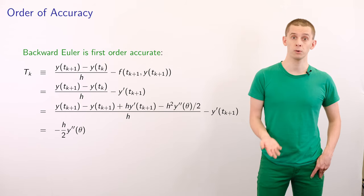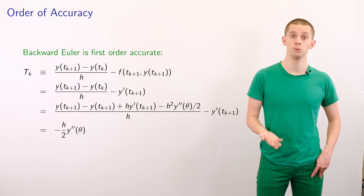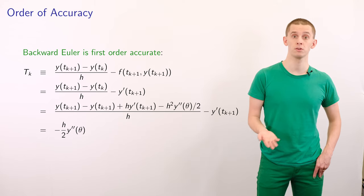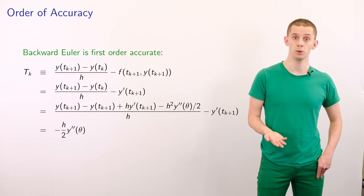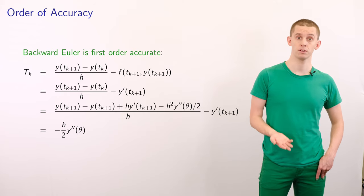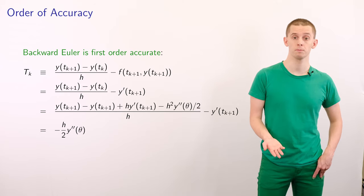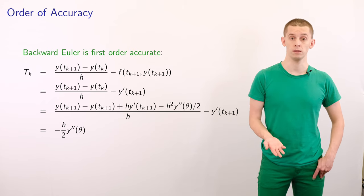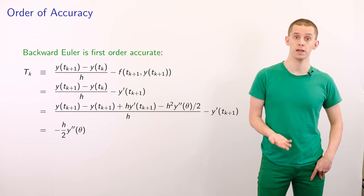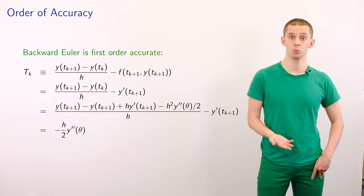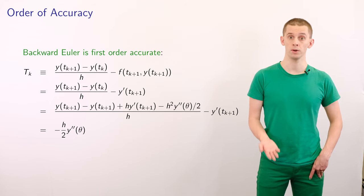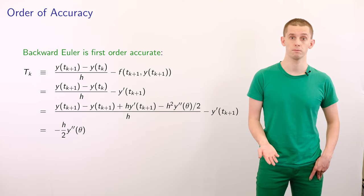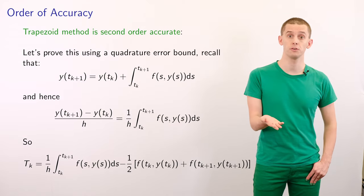Backward Euler is also first-order accurate. Following similar steps but Taylor expanding at y(t_{k+1}), we end up showing that the truncation error equals −h/2 · y″(θ) for some θ between t_k and t_{k+1}. The trapezoid method is second-order accurate, which we can prove using the quadrature error bound.